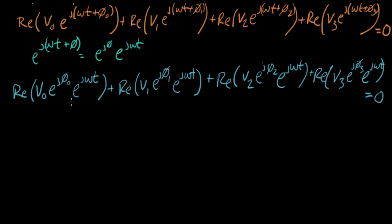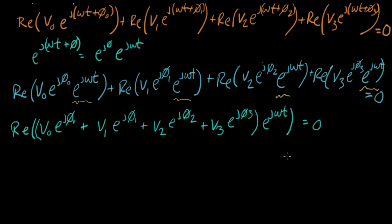And here's a nice simplification: we take out this common term, we're gonna factor out this common term across the entire equation. And what do we come up with? The result is Re[(V₀ e^(jφ₀) + V₁ e^(jφ₁) + V₂ e^(jφ₂) + V₃ e^(jφ₃)) e^(jωt)] equals zero. We're getting close.